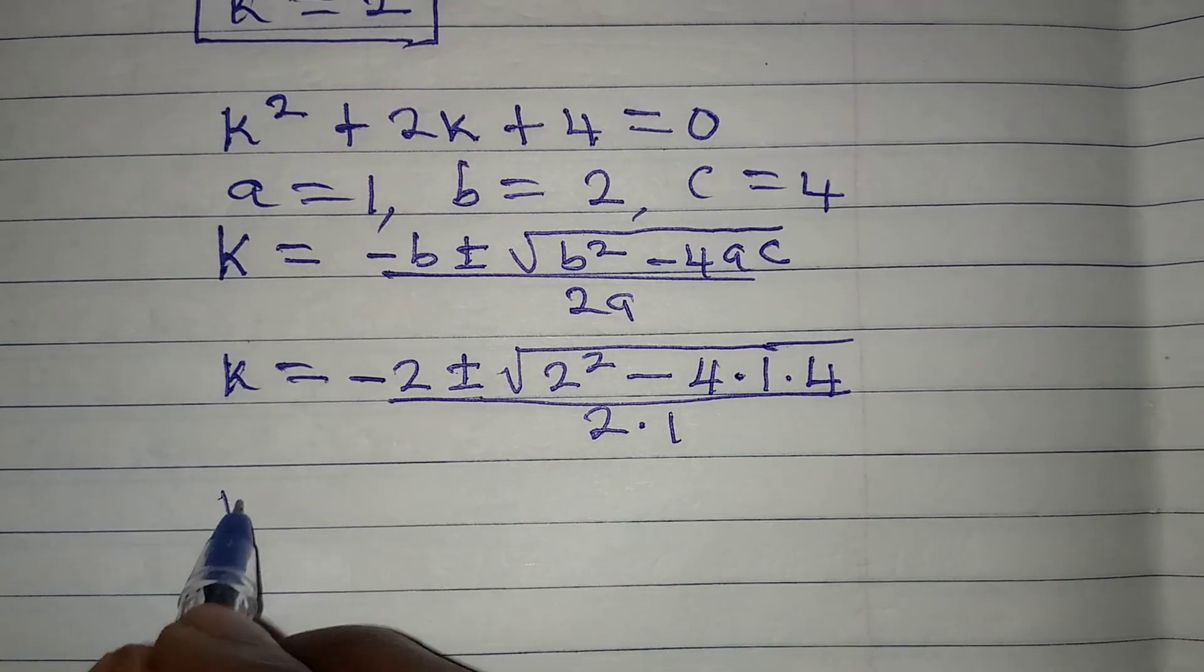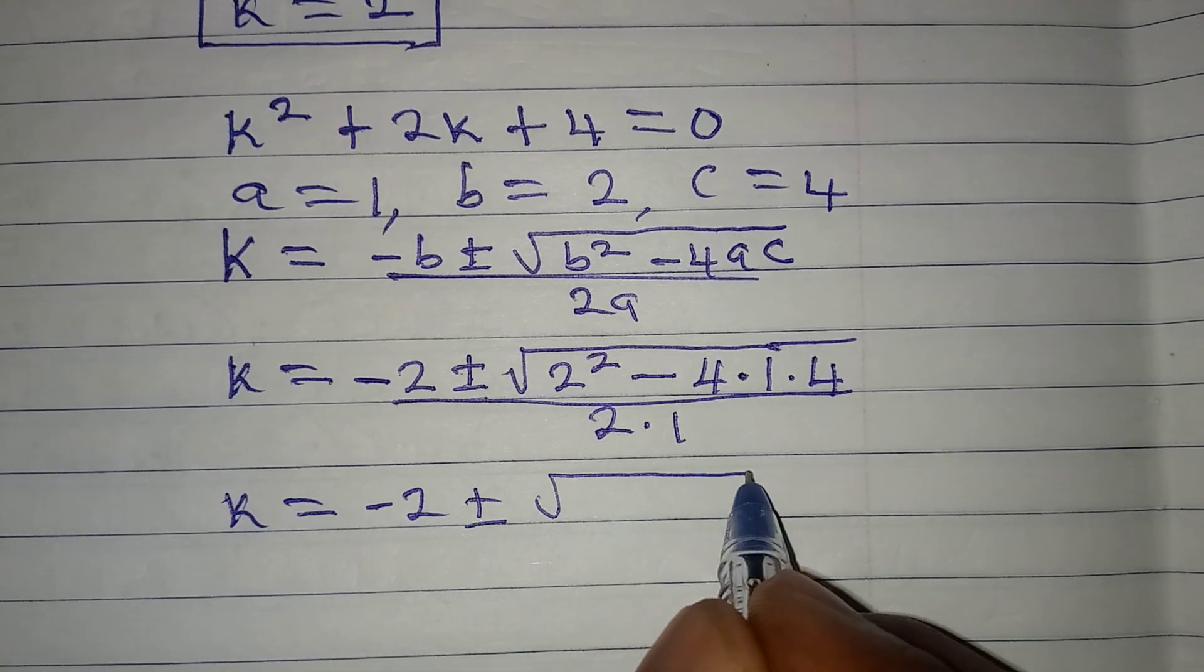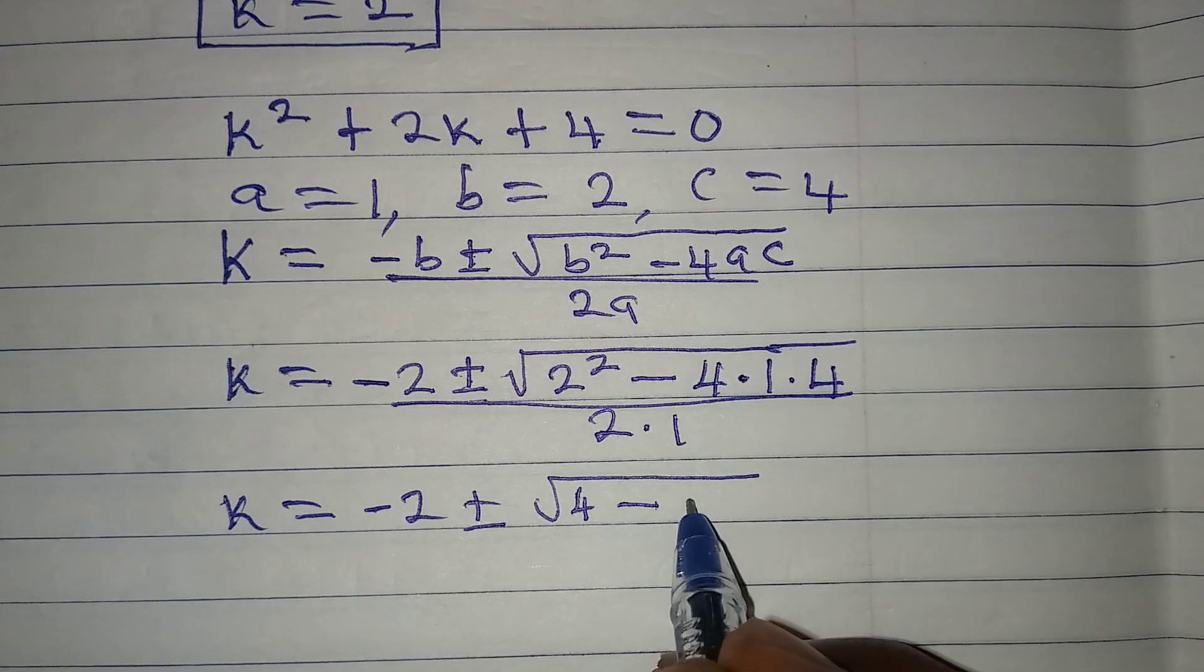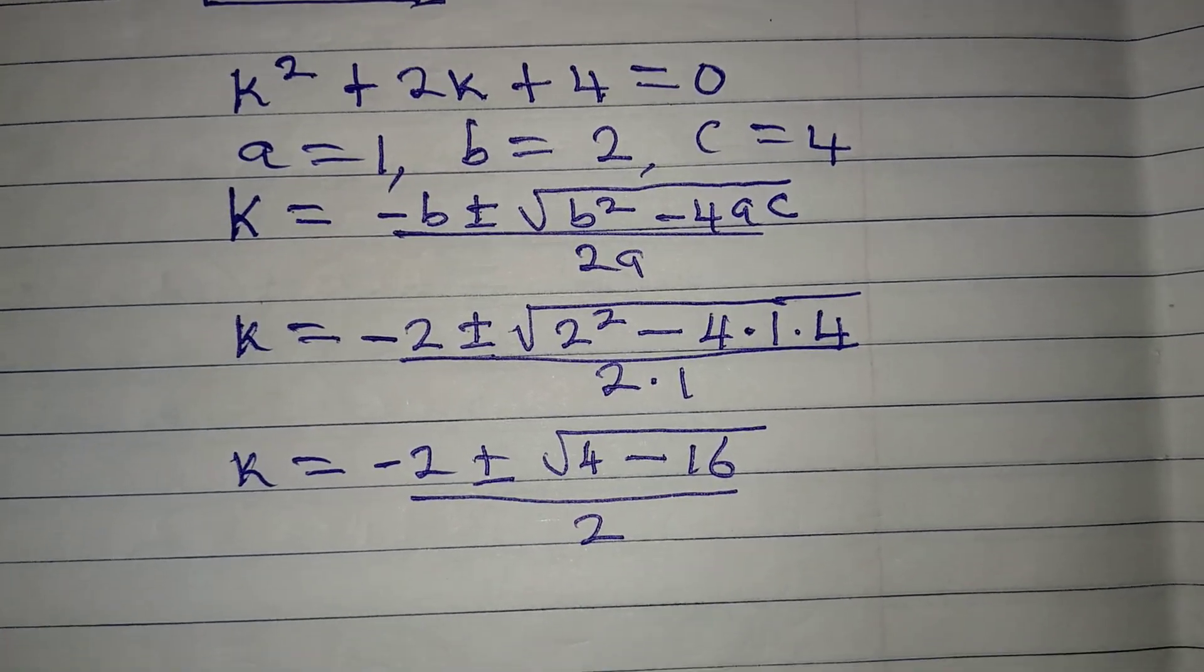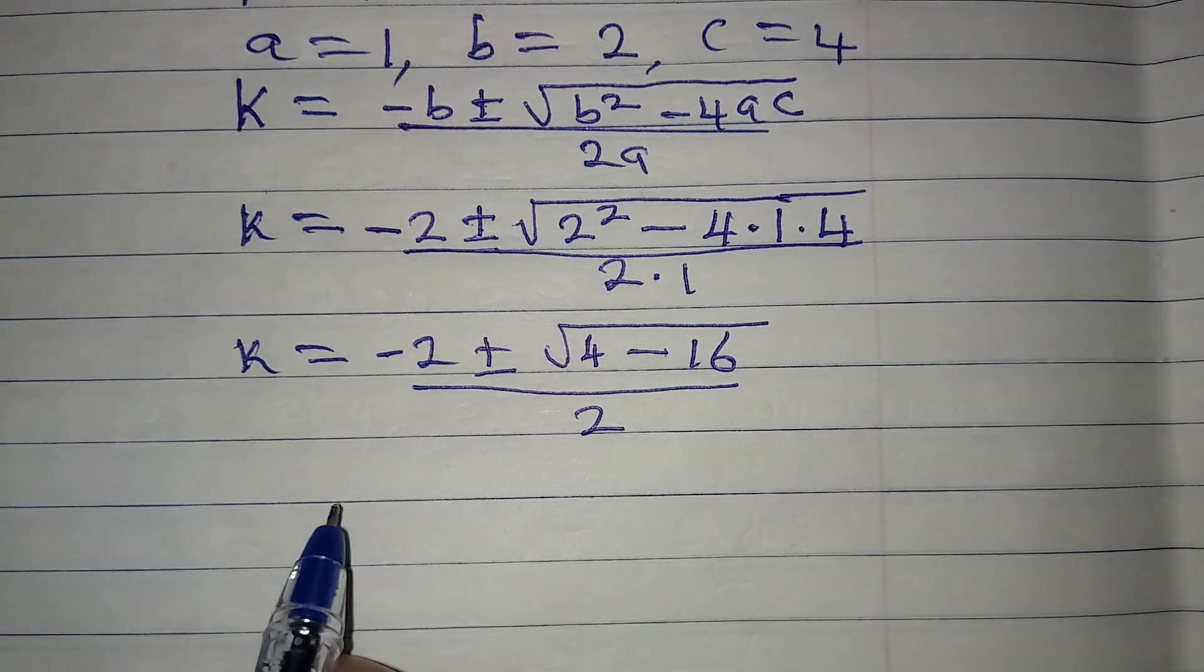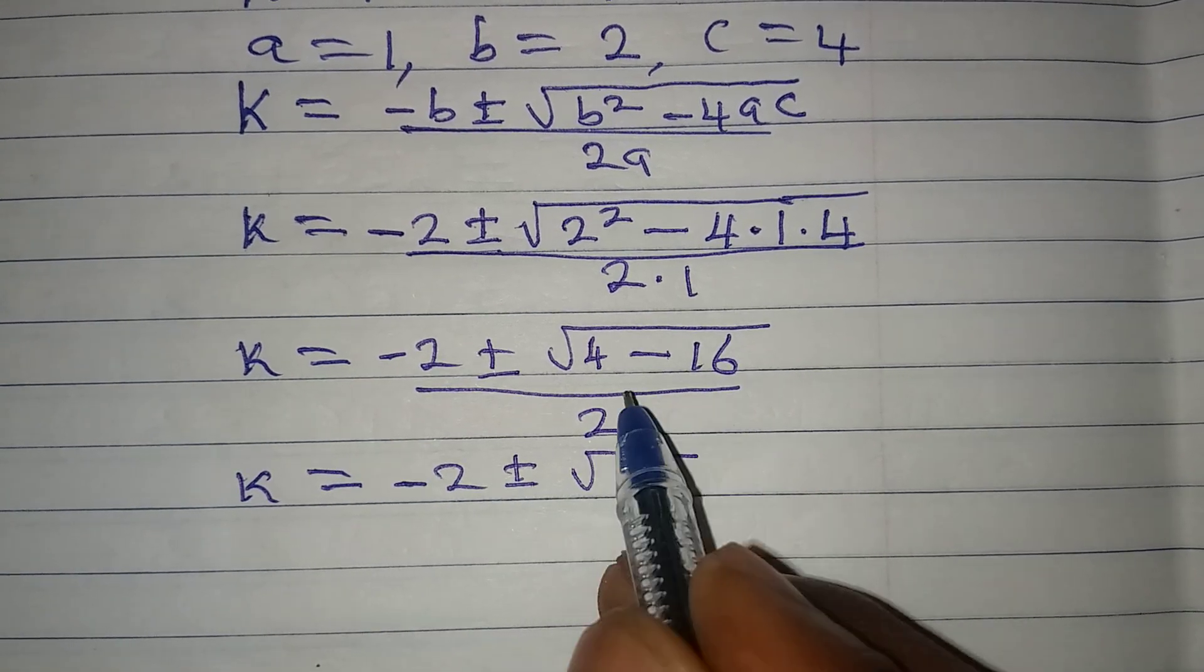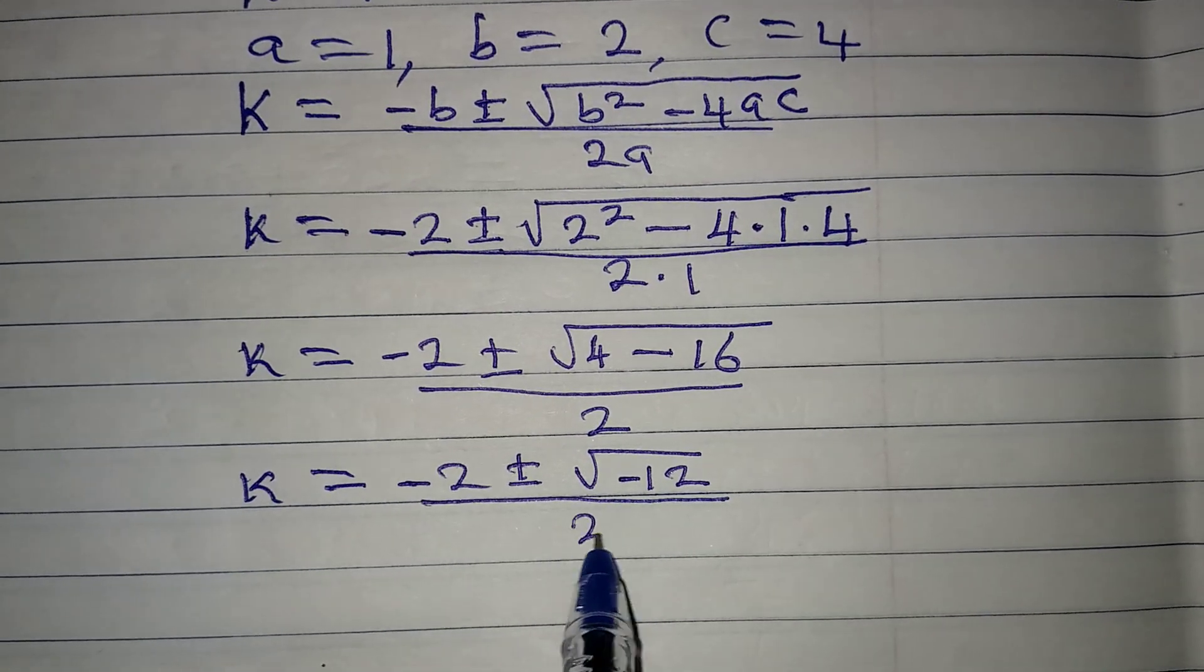To continue, then k will be equal to -2 ± √(2², I mean the square of 2 is 4 minus 4 times 1 times 4. That will give 16). This is over 2. The next thing is to evaluate the square root. Our k now will be -2 ± (4 minus 16 will give -12). And this will be over 2.